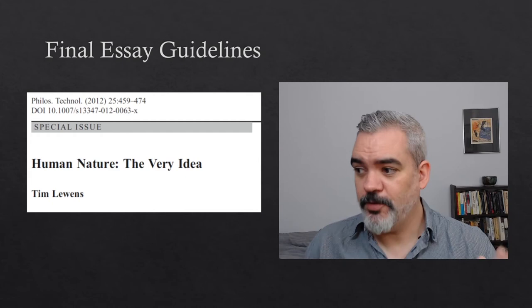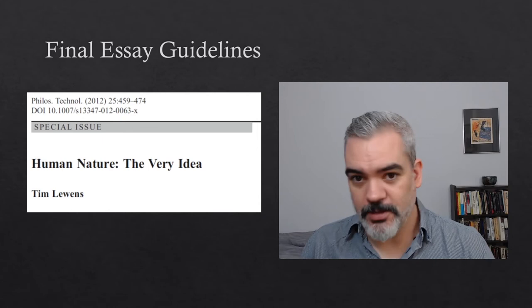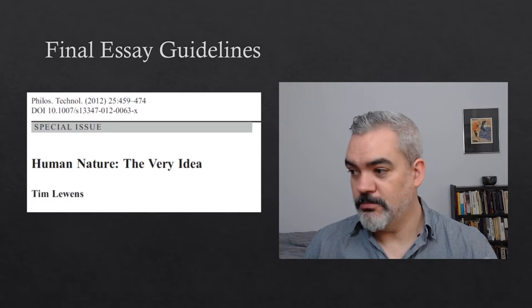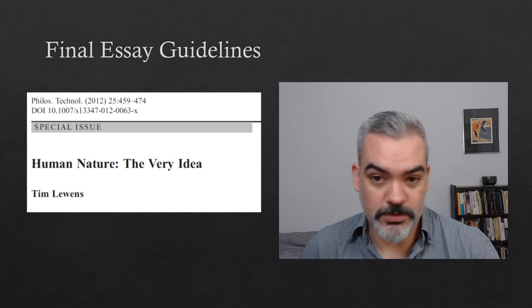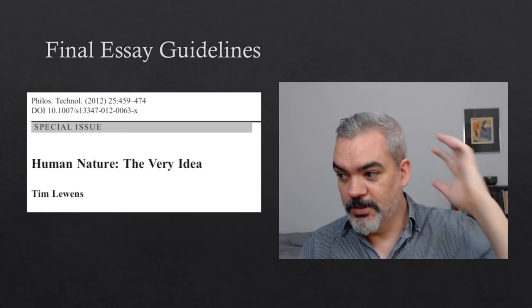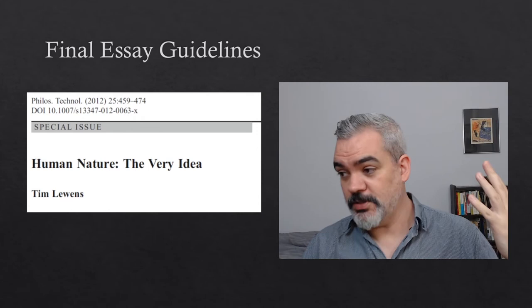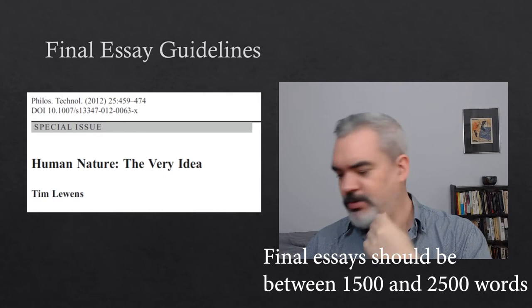For your final essay, you're going to identify some conversation in the scholarly literature on science and values and weigh in on it — you're going to give your opinion about some ongoing conversation. If you want a nice example of what this looks like in the ideal case, the readings for this week are a beautiful example. Consider Lewins's paper 'Human Nature: The Very Idea.' Your essays are going to be much shorter — 1500 to 2500 words. Lewins's paper is much longer, so you won't be able to get into as much depth as he does.